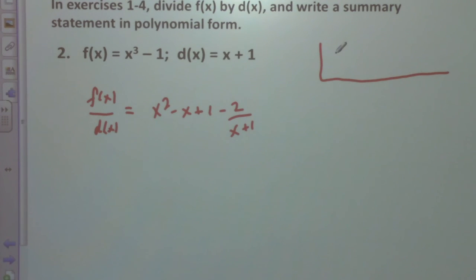x squared minus x plus 1 minus 2 over x plus 1. Minus 2 over x plus 1. So you work it out like this. So this is going to be like 1, 0, 0, negative 1. Bring this down, we have 1. And 1 times negative 1 times 1 is negative 1. Then we negative 1 times negative 1, 1, 1. Negative 1 times 1 is negative 1, negative 2. It looks like that to me, is that right? Yeah, that's good. Alright, thanks for doing that.